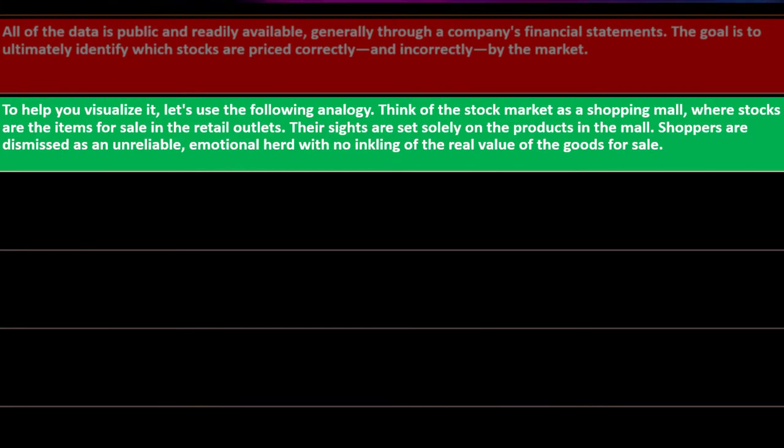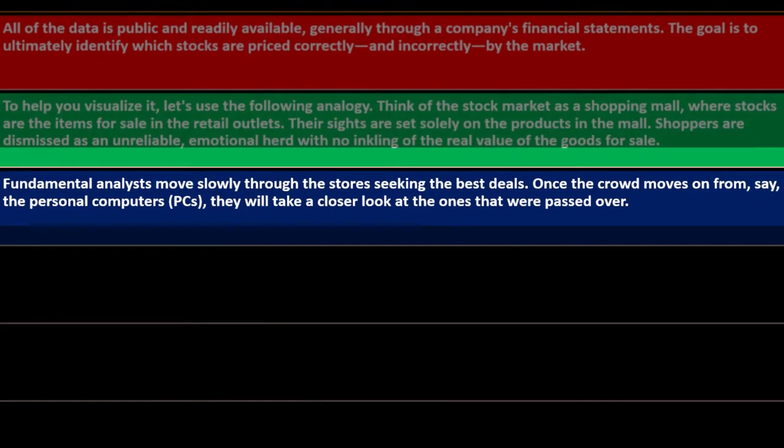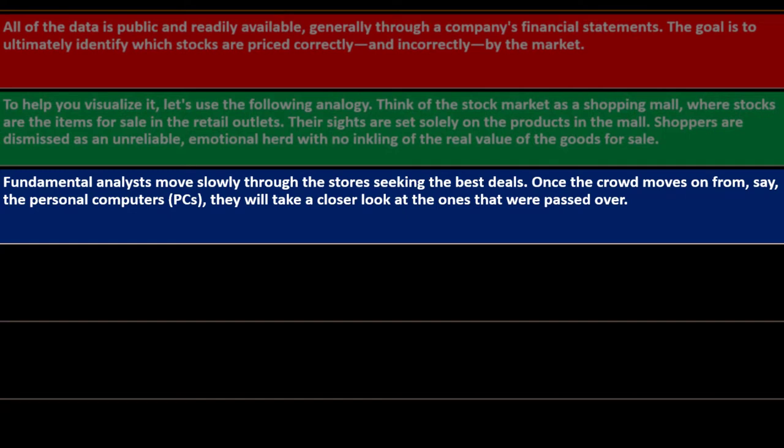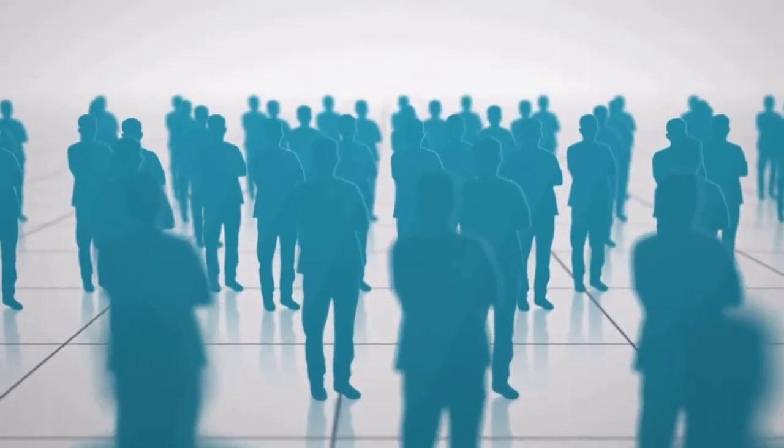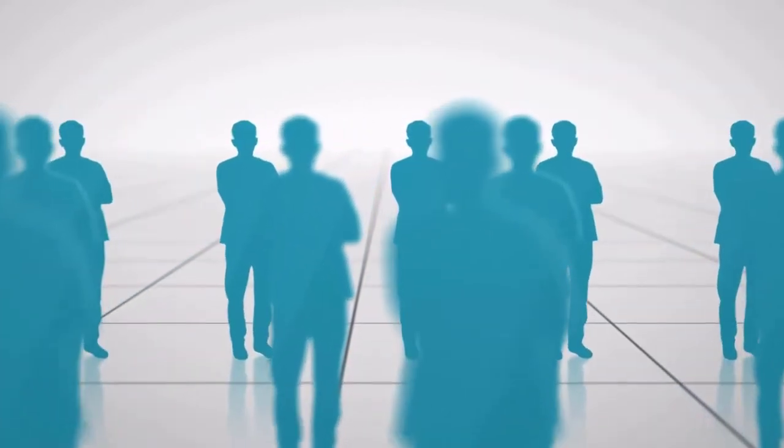To help you visualize it, let's use the following analogy. Think of the stock market as a shopping mall where stocks are the items for sale in the retail outlets. Their sites are set solely on the products in the mall. Shoppers are dismissed as an unreliable, emotional herd with no inkling of real value of the goods for sale. Fundamental analysis moves slowly through the store seeking the best deals. In other words, if you think about a shopping analogy, a lot of people just go to the store and might buy on impulse instead of methodically going through the store and picking deals.